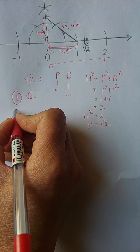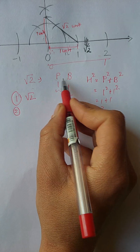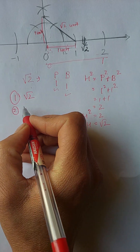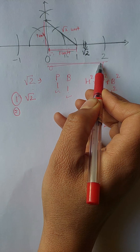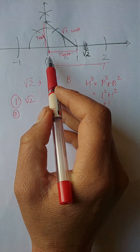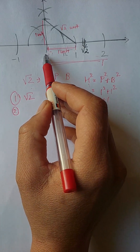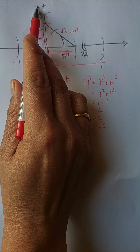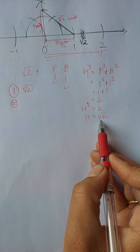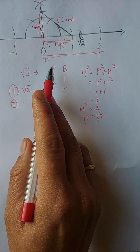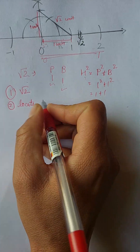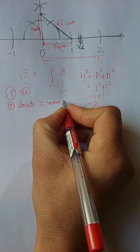Second task: if you choose different combinations of perpendicular and base, you get different irrational numbers. In this case we chose p equals one, b equals one. If you choose b equals two and p equals one, h will be something different. If you choose base equals four and perpendicular equals three, you'll get yet another value of h, which may again be an irrational number. So you have to locate three more irrational numbers of your choice.